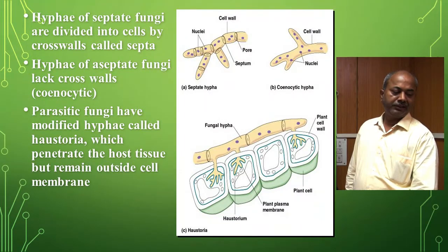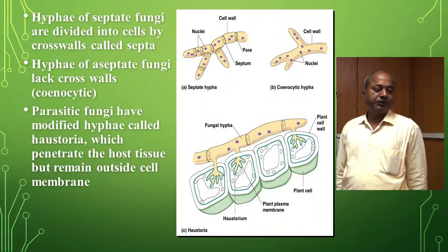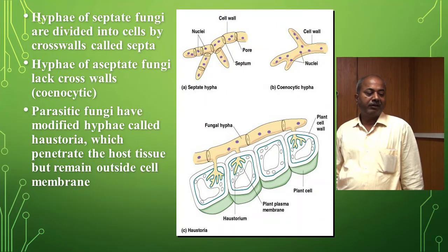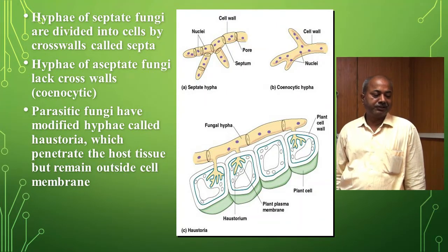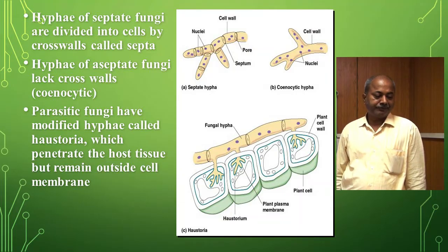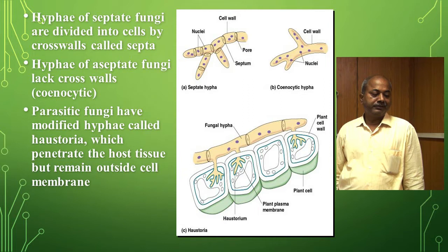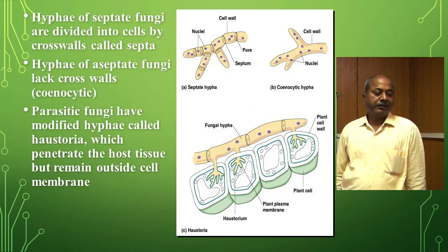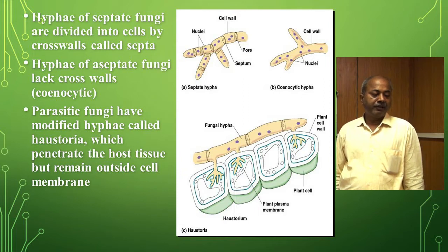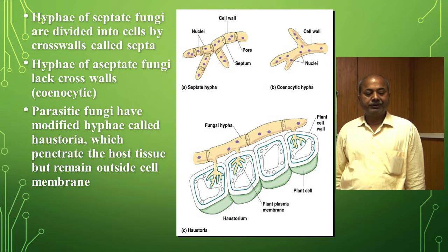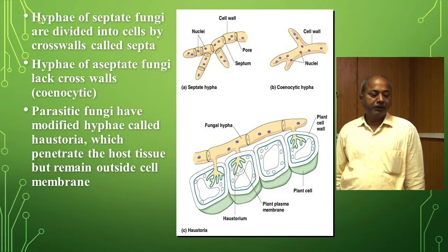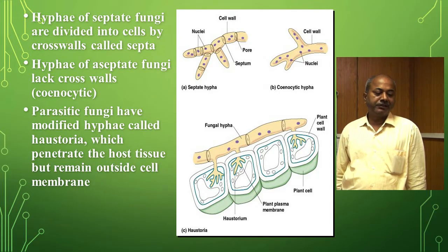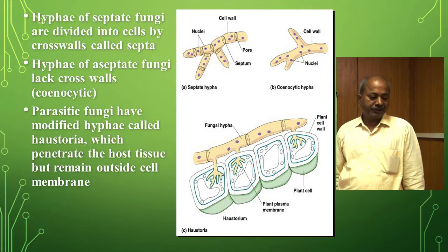Hypha is a tubular branched structure. In septate fungi, there are cross walls present, while in aseptate fungi, which lack cross walls and have a multinucleate condition, that is known as coenocytic condition.